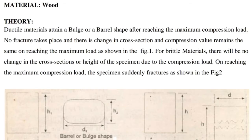Theory: Ductile materials attain a bulge or barrel shape after reaching the maximum compression load. No fracture takes place and the change in cross section and compression value remains the same on reaching the maximum load, as shown in figure 1. For brittle materials, there will be no change in cross section or height of the specimen due to compression load. On reaching the maximum compression load, the specimen suddenly fractures, as shown in figure 2.